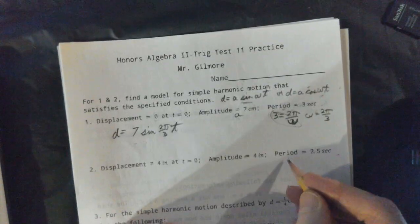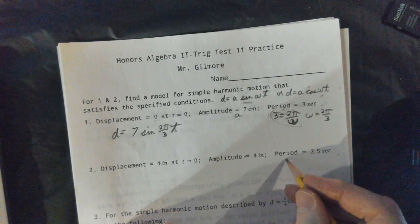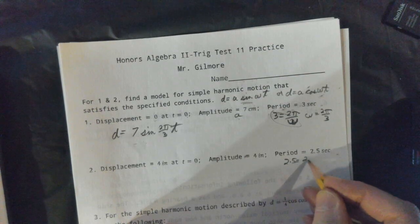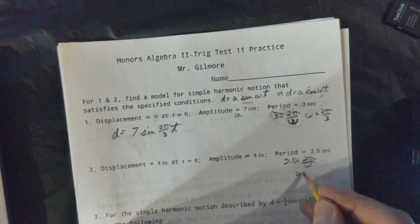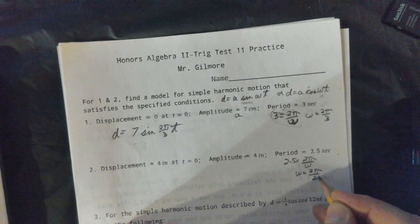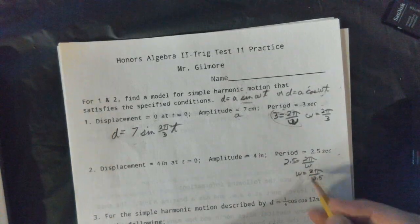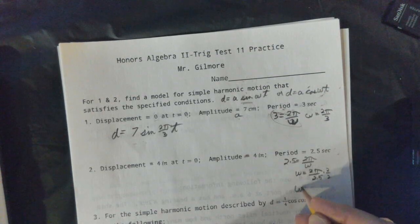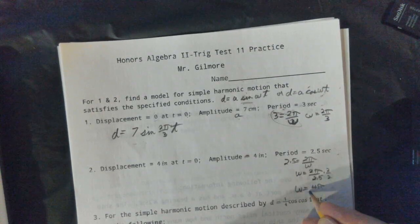Now I'm going to figure out omega here. 2.5 equals 2π over omega, so omega is 2π over 2.5. I'd rather see integer values here, so I'm going to multiply top and bottom by 2 and have omega equal 4π over 5.